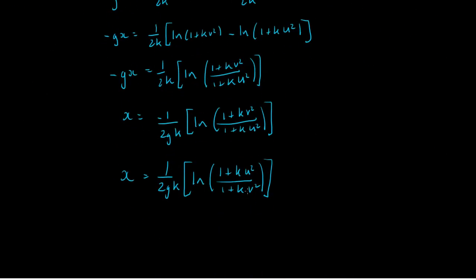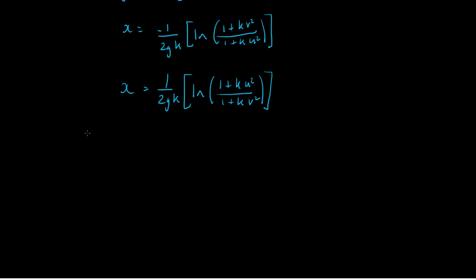So now if we substitute v equals zero into this, we will return our maximum height obtained. So if v equals zero, we get x is equal to 1 over 2gk times by the natural logarithm of 1 plus ku squared. Now underneath we have v is now zero, so zero squared times by k, and then one plus that so it's just divided by one, which is that itself.